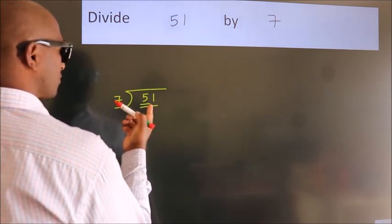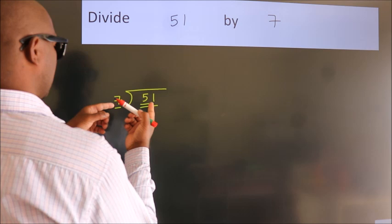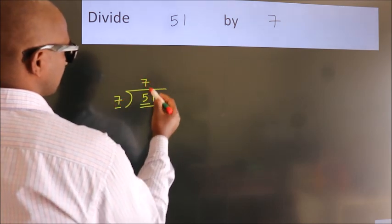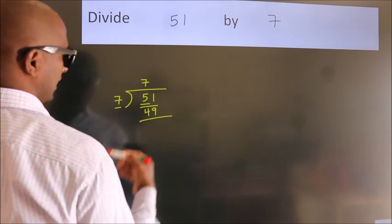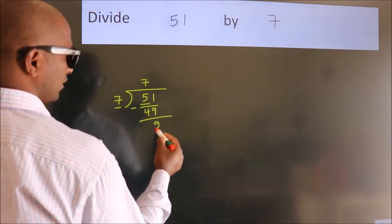A number close to 51 in 7 table is 7 sevens 49. Now we should subtract. We get 2.